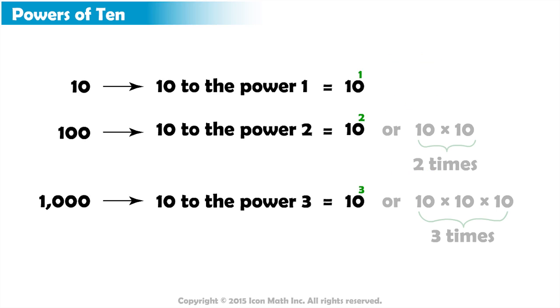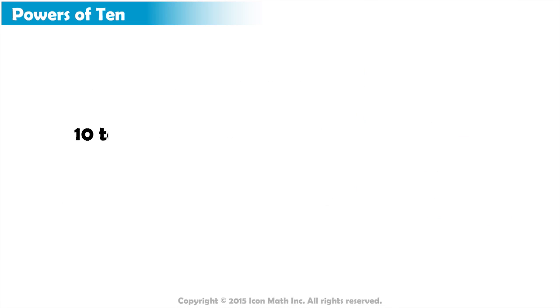Notice that the power equals the number of zeros on the right of 1 and also equals the number of times we multiplied 10 by itself. For example, 10 to the power 4 could be written like this and it's equal to 10 multiplied by itself 4 times, which is 1 followed by 4 zeros.